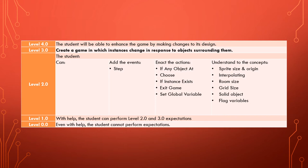To do that, on top of the skills we've already learned, we also need to learn about the step event, the 'if any object at' action, the choose action, the 'if instance exists' action, exit game action, and set global variable action. We also need to understand sprite size and origin, overlapping, room size, grid size, solid objects, and flag variables.